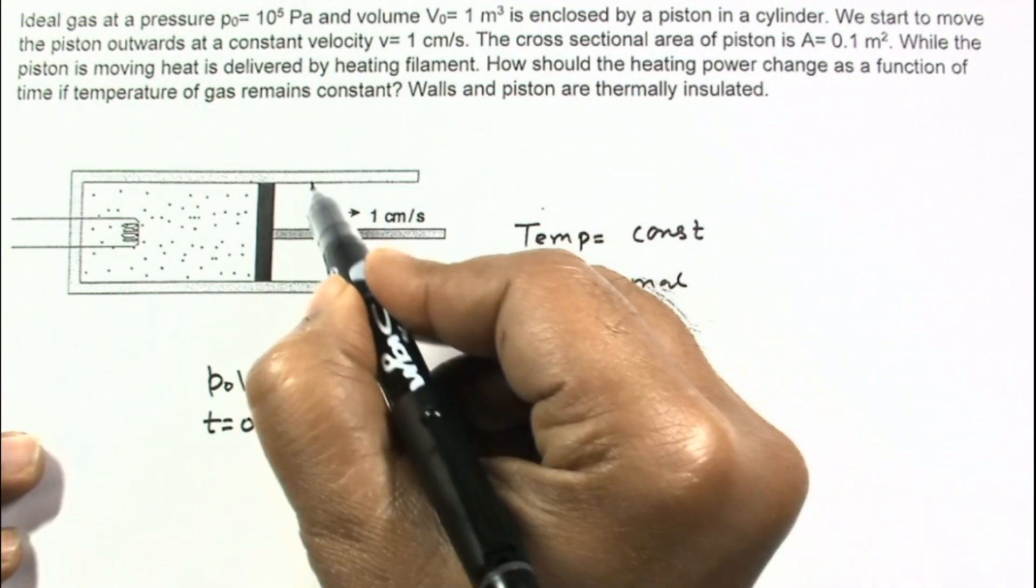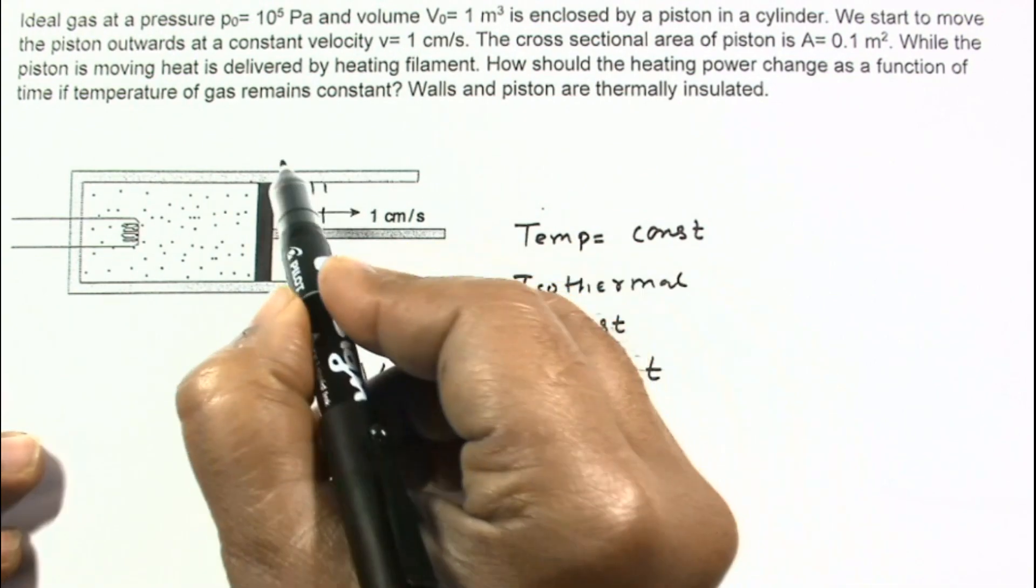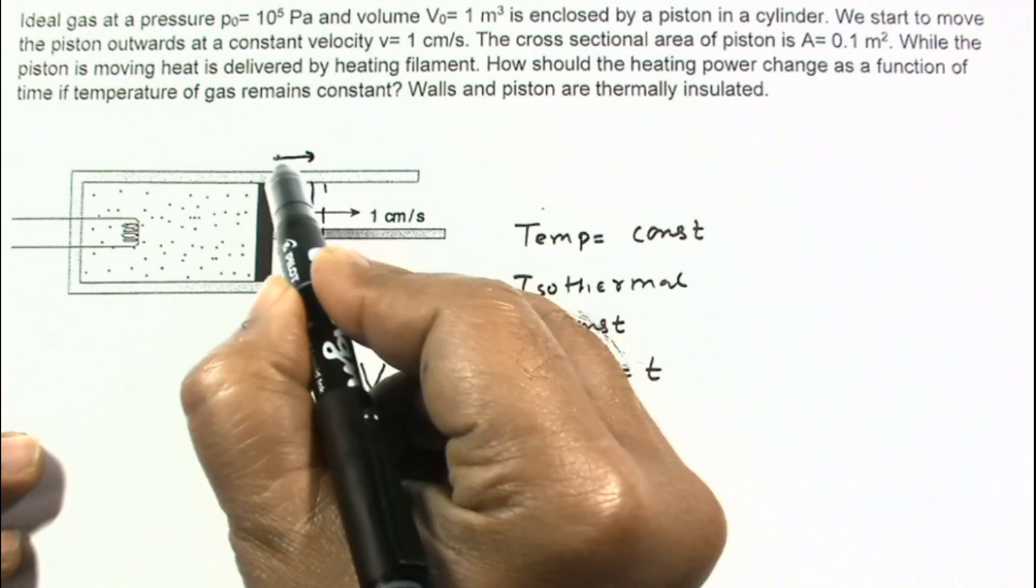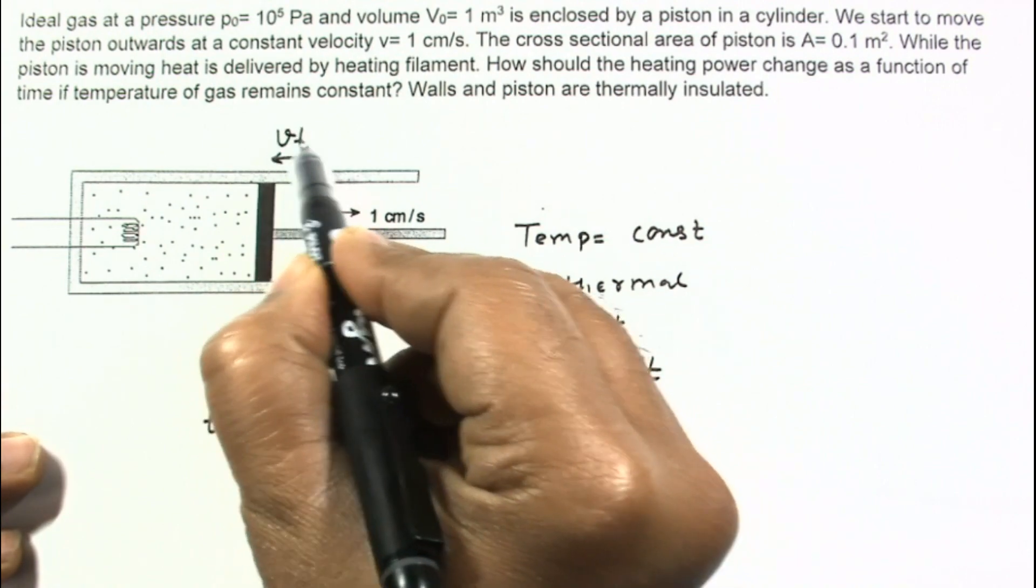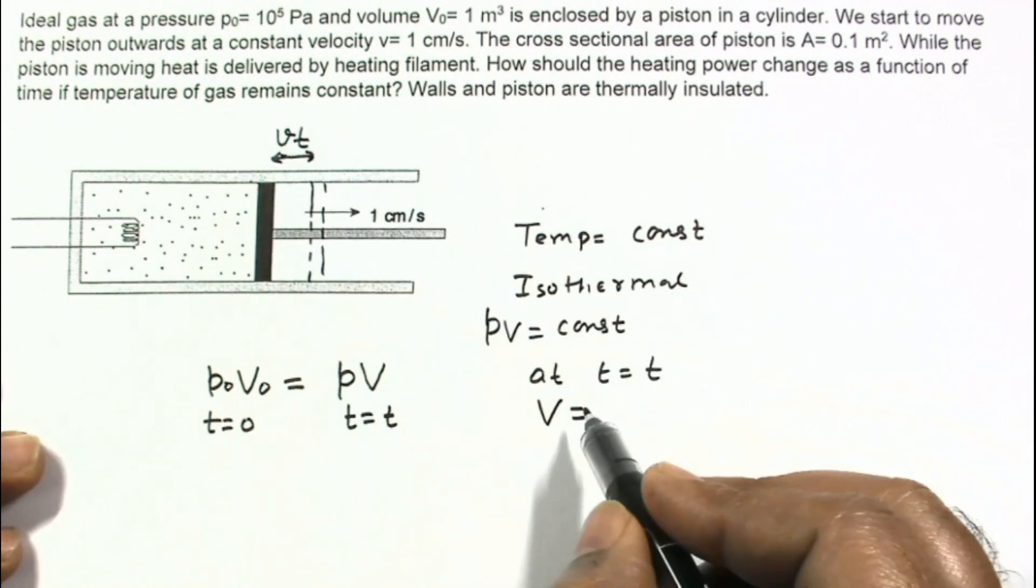Suppose the piston reaches somewhere here in T time interval, it will move a distance velocity multiplied by time. Velocity multiplied by this time interval is T.